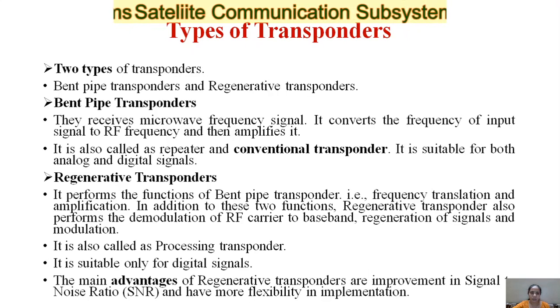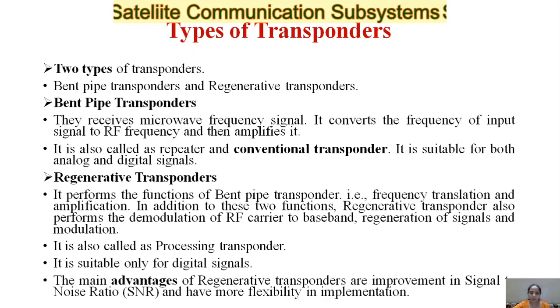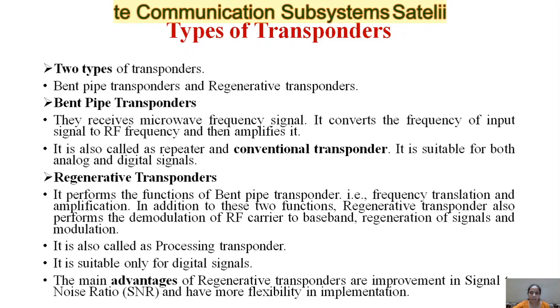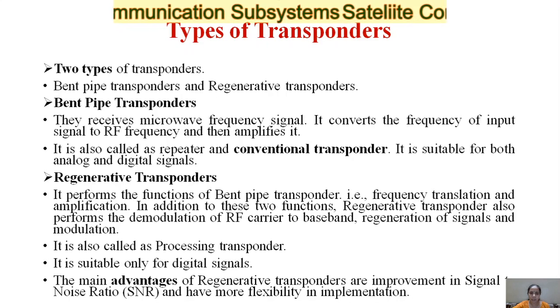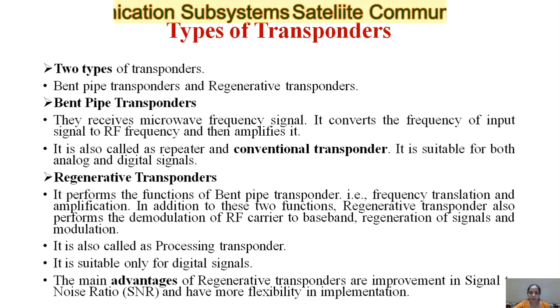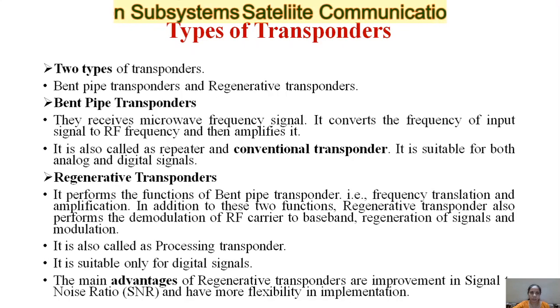The main advantage of the regenerative transponder is improvement in signal-to-noise ratio and more flexibility in implementation compared to the bent-type transponder. There are also two subtypes of bent-type transponders: the single conversion bent-type transponder, which operates at 6/4 GHz — meaning 6 GHz is down-converted to 4 GHz.